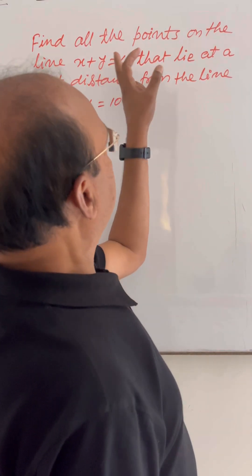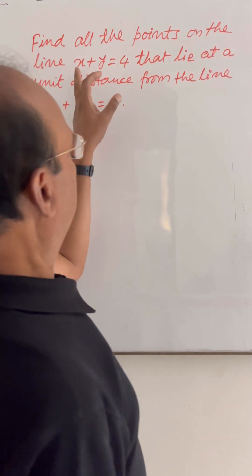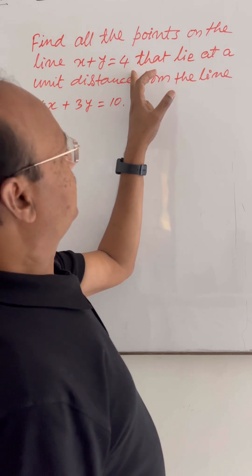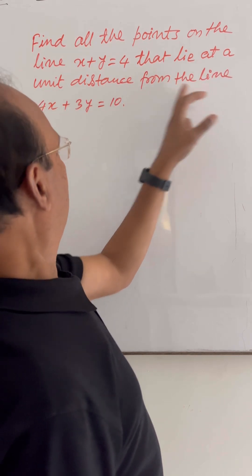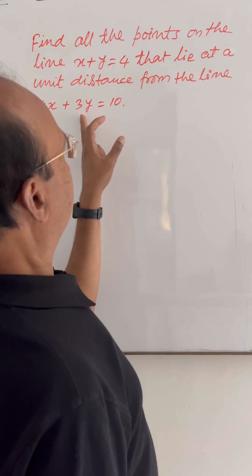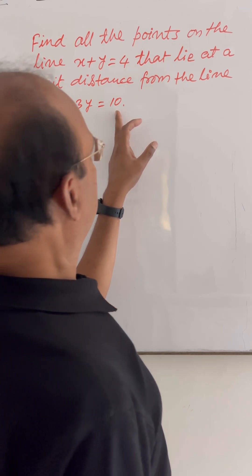Here question is, find all the points on the line x plus y is equal to 4 that lie at a unit distance from the line 4x plus 3y is equal to 10.